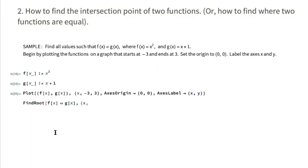Next up, how to find the intersection point of two functions. Or another way to say the same thing is how to find where two functions are equal. So in this sample, we're looking to find all the values such that f(x) will equal g(x). I've chosen the function f(x) = x² and g(x) = x + 1.